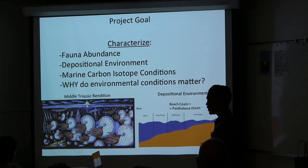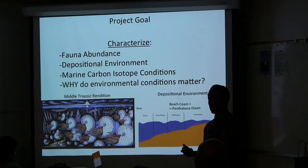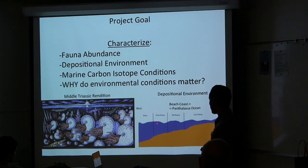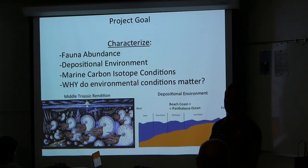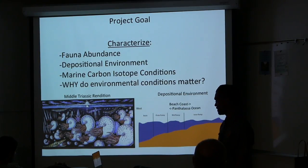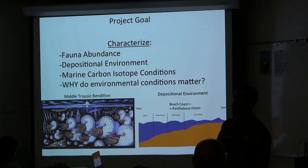This hypothesis is tested by determining fauna abundance, depositional environment, and some environmental conditions. Depositional environment helps determine where rocks formed — in a marine basin, outer ramp, middle ramp, or inner ramp — contextualizing fauna abundance and environmental conditions. This project intends to produce the lacking fauna abundance and geochemical data that helps reconstruct the Paleozoic to modern fauna transition.